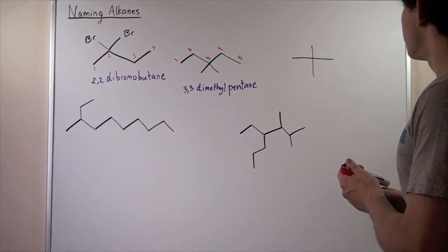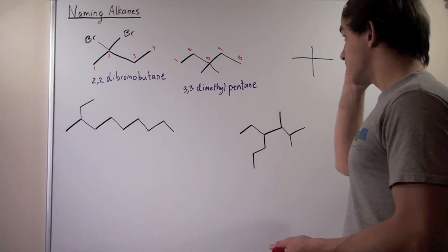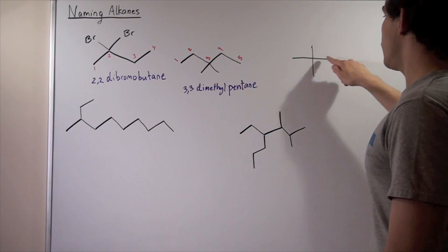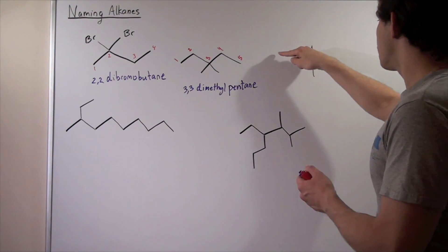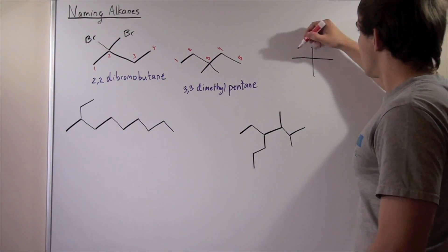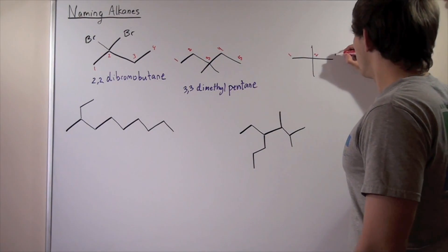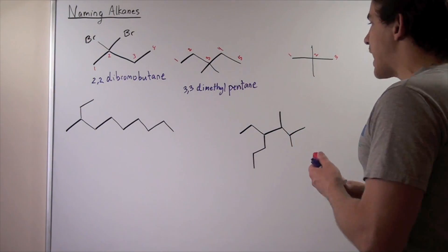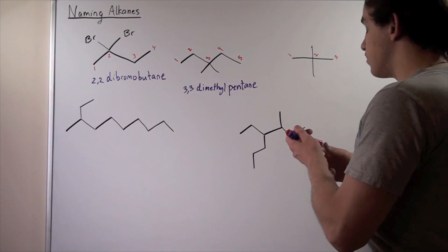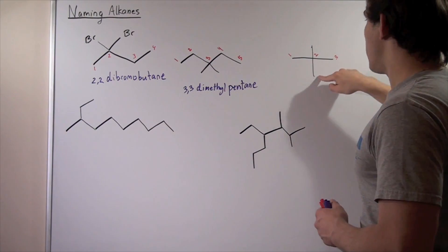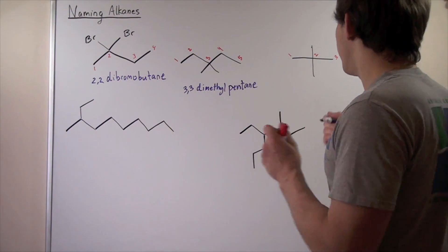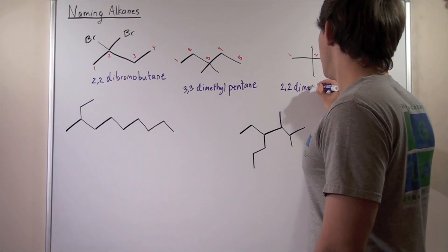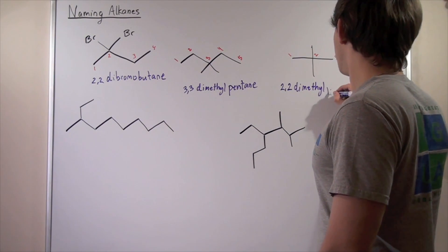Let's look at the third example. Once again, longest possible carbon backbone: one, two, three — or one, two, three — it doesn't matter which way we go. So let's go straight across: one, two, three. So a three-carbon backbone means we're dealing with propane. And on the second position, we have two methyl groups. So we have 2,2-dimethylpropane.